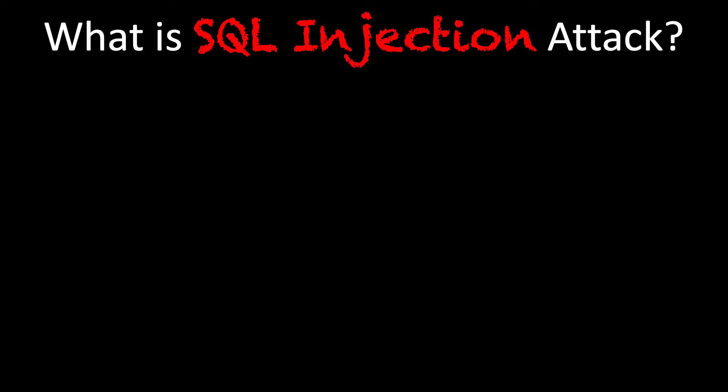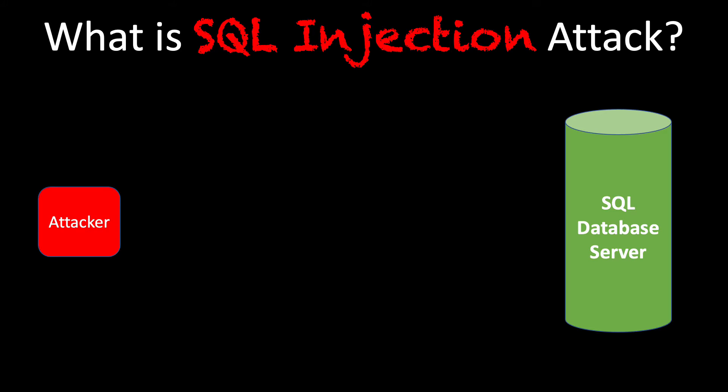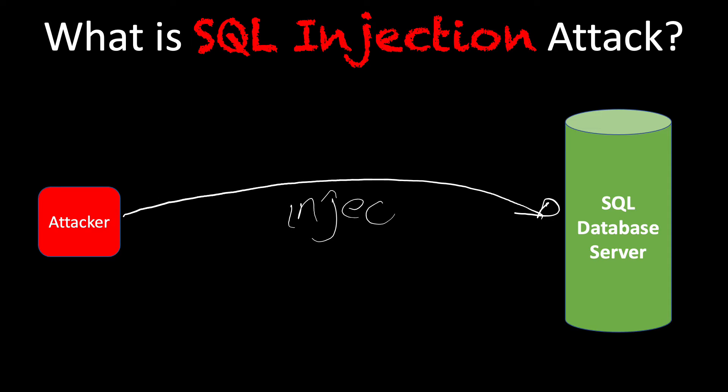Let's look at our scenario here. We have our SQL database server on the right-hand side, and we have our attacker on the left-hand side. Essentially what we're trying to do here is the attacker is injecting code into the SQL database.